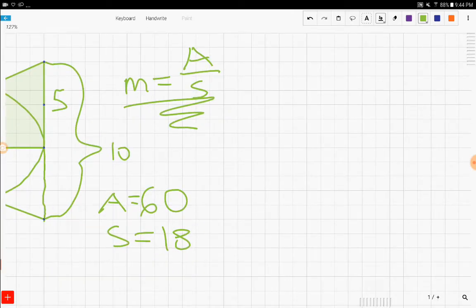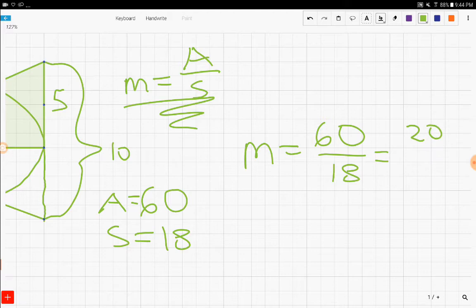And now we just have to calculate A over S. So M equals 60 over 18, which equals 20—no, 10 over 3. And that's our answer.